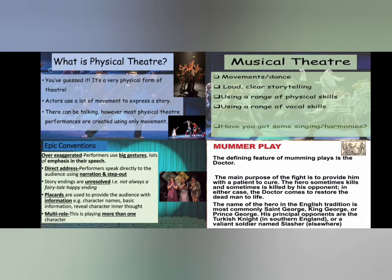Actors multi-role, where they play more than one character. Our final genre is murmur play. The defining feature of a murmur play is the doctor — the main purpose of the fight is to provide him with a patient to cure. The hero sometimes kills and sometimes is killed by his opponent; in either case the doctor comes to restore the dead man to life. The hero in the English tradition is most commonly Saint George, King George or Prince George. His principal opponent is the Turkish Knight in southern England, or the valiant soldier named Slasher elsewhere. In a murmur play, the acting is very over-the-top and funny.